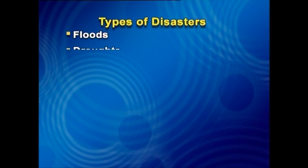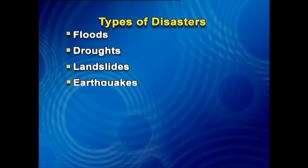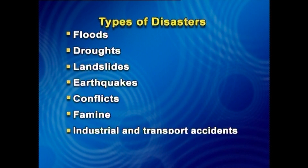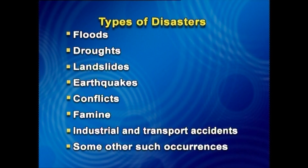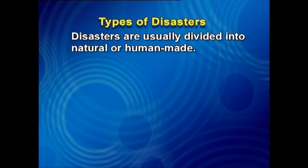Lesson 3: Types of Disasters. Disasters occur in various forms, such as floods, droughts, landslides, earthquakes, conflicts, famine, industrial and transport accidents, and other such occurrences. Disasters are usually divided into natural or human-made and man-made.